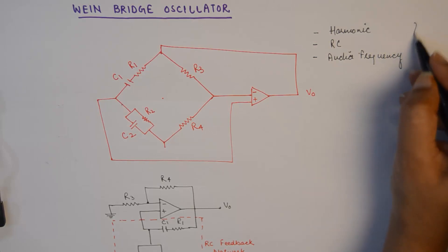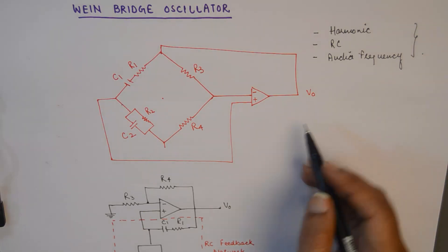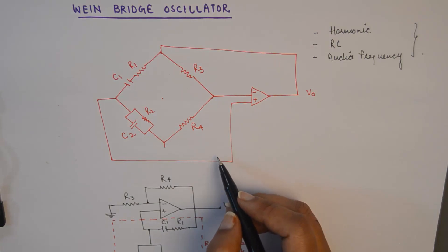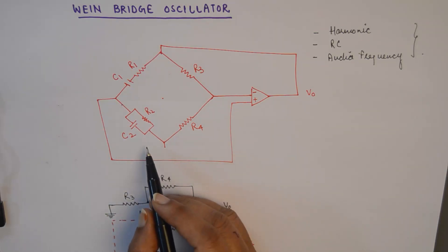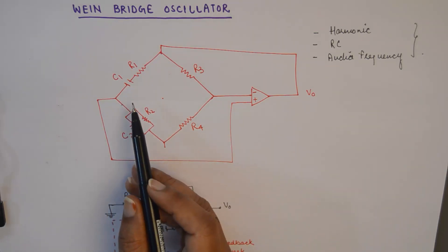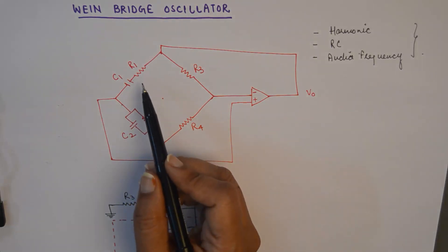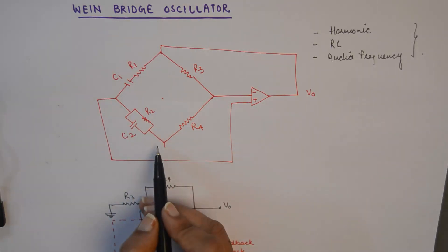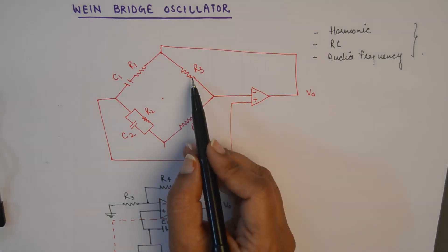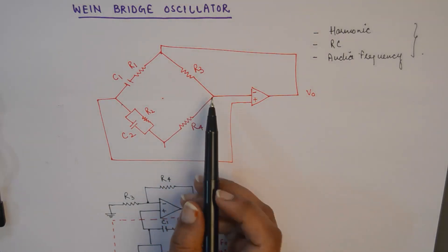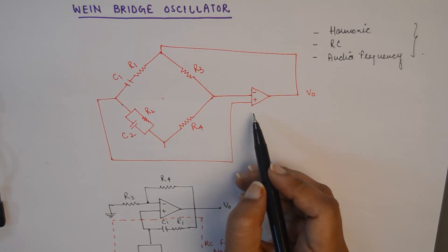These are some key characteristics of an RC Wien Bridge oscillator. This is the basic diagram of a Wien Bridge oscillator and as you can see, this is a bridge circuit. This bridge circuit involves two different combinations of R and C. In one arm we have the series combination of R and C, while in the adjacent arm we have the parallel combination of R and C. In the remaining two branches we have simple resistive arms R3 and R4, along with an operational amplifier used as an amplifier in the forward path.